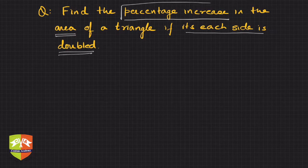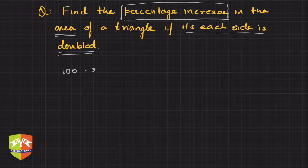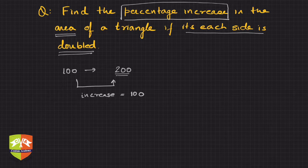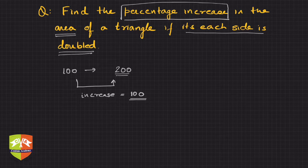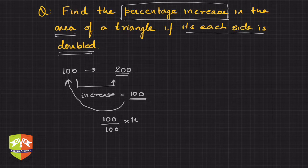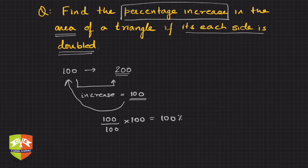First, let us understand what percentage increase means. Let's say you have 100 rupees and someone gives you 100 more, so now it is doubled to 200 rupees. The increase is 100, and the percentage increase on the original 100 is 100%. So if you double anything, you have a 100% increase.